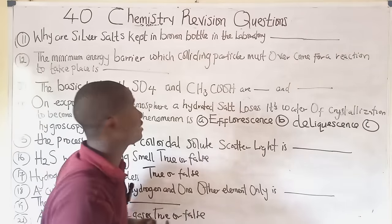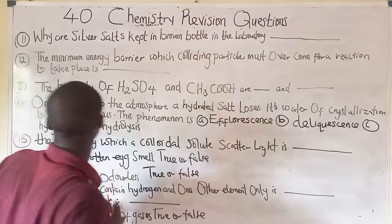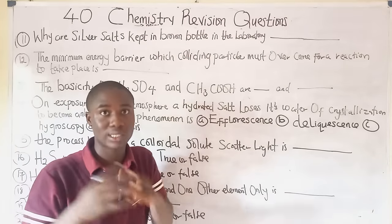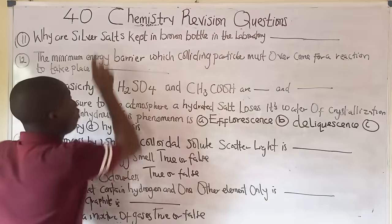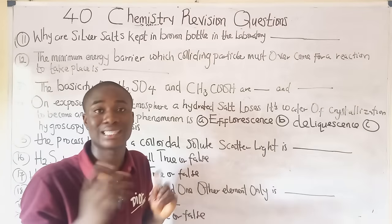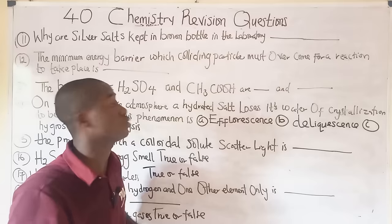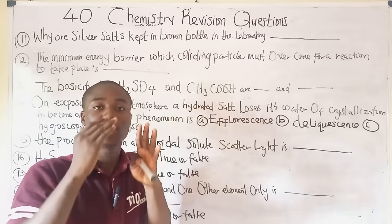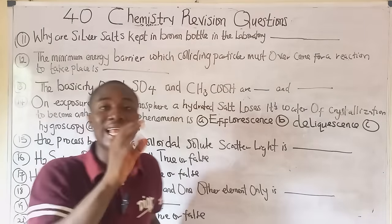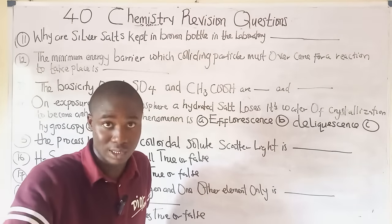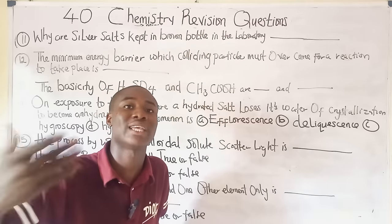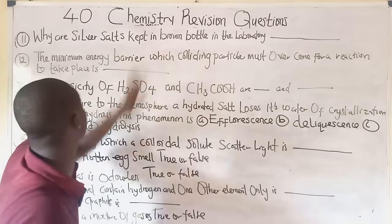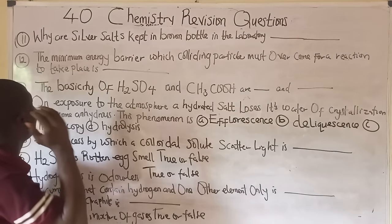Question eleven: why are silver salts kept in brown bottles in the laboratory? The reason is that when silver salts are exposed to sunlight, they decompose. This type of reaction is called a photochemical reaction — a reaction that is influenced by light.